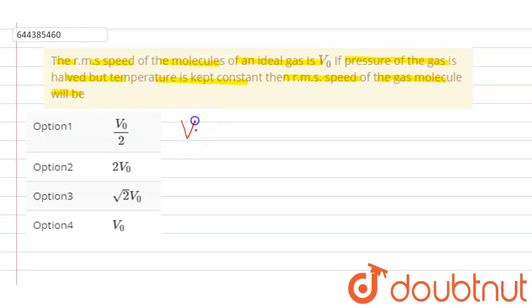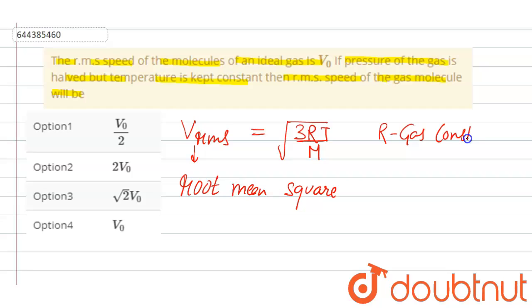RMS speed means root mean square, which is given by under root 3RT upon M, where R is gas constant, T is temperature of gas, and M is molecular mass of a gas.